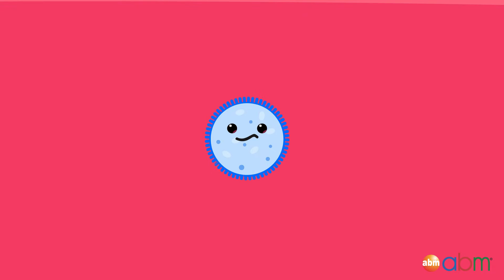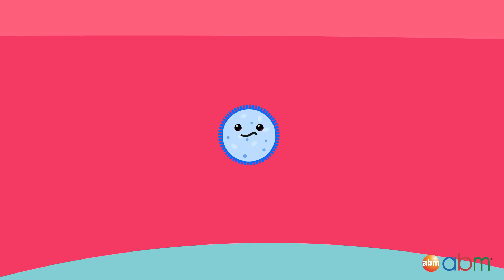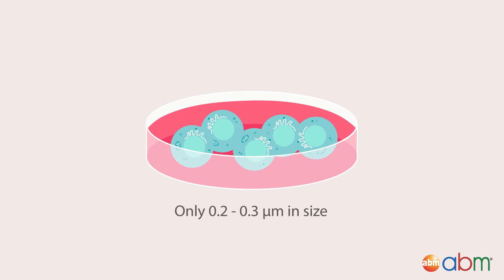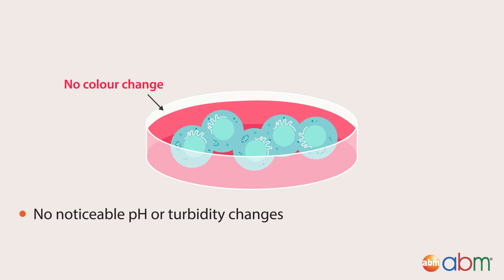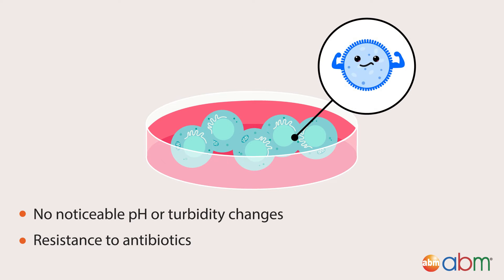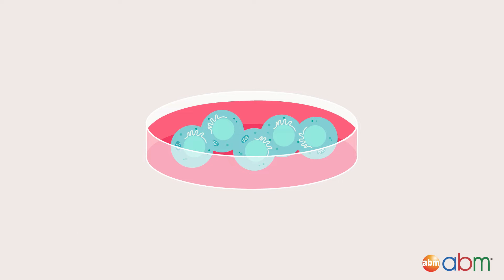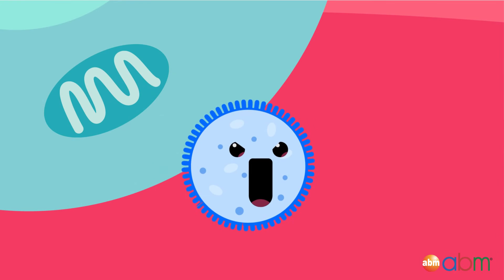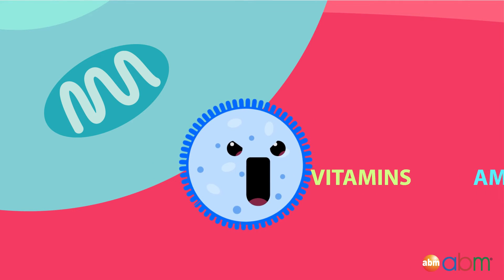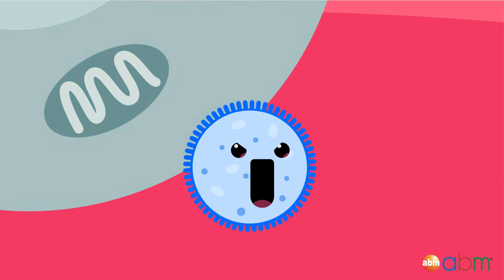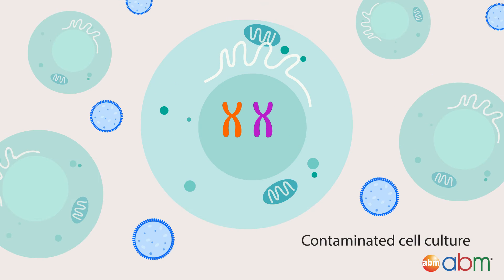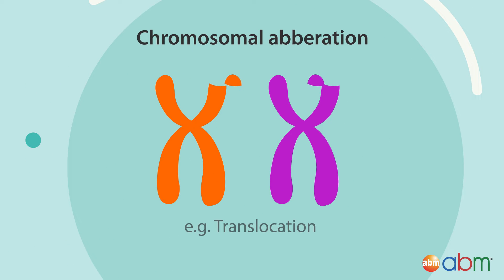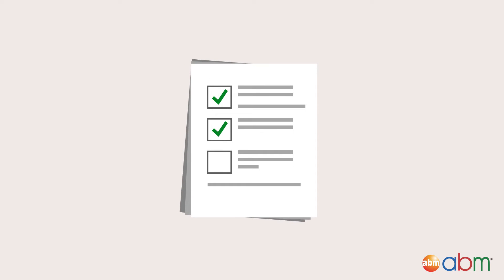One of the most common unnoticeable types of contamination is mycoplasma. Mycoplasmas are a type of bacteria that are only 0.2 to 0.3 micrometers in size, which makes them hard to see. They do not cause noticeable pH or turbidity changes, and they lack a peptidoglycan cell wall, which makes antibiotics ineffective against them. Once mycoplasma infects your cell culture, it can cause cells to die as they take up most of the available nutrients. What's most scary is that mycoplasma can also cause chromosomal aberrations and change gene expression profiles without actually killing your cells, therefore affecting your experimental results without your knowledge.